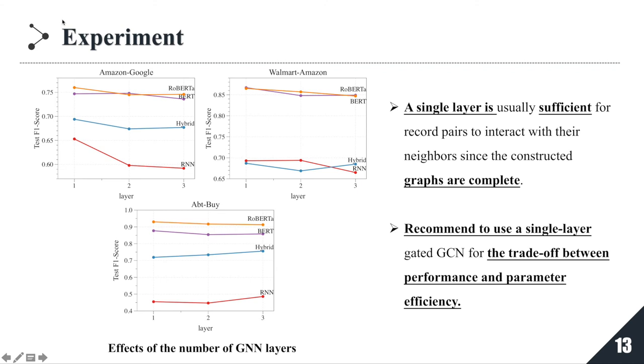On the ABTBY dataset, more layers achieve marginal performance improvement than single layer. This is because the average graph size on ABTBY is relatively large and its record involves text boxes with possible complex semantics to be captured. Overall, we recommend to use a single layer gated GCN in GNEM for the trade-off between performance and parameter efficiency.